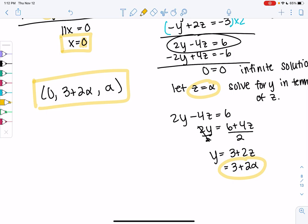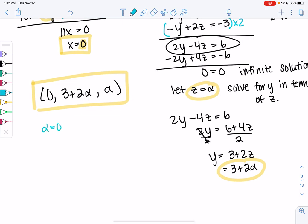y and z have many choices, but x is always zero. Examples of solutions: if alpha is zero, zero, 3, zero is a solution. If alpha is 1, x is still zero, y would be 5, and z would be 1. This is a solution. There are many, many, many more.